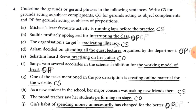Now students, with the help of Exercise 4, we will learn what is subject complement, object complement, and object of preposition. Underline the gerund and gerund phrase in the following sentences. Write CS for gerund acting as subject complement, CO for gerund acting as object complement, and OP for gerund acting as object of preposition.